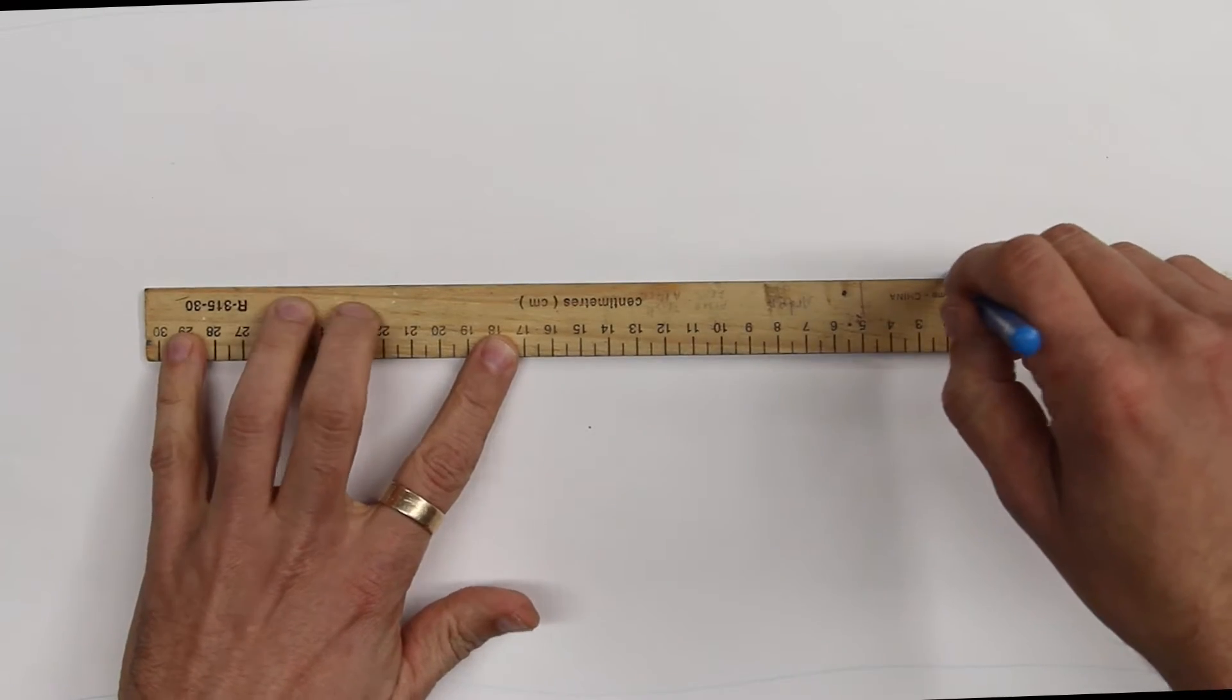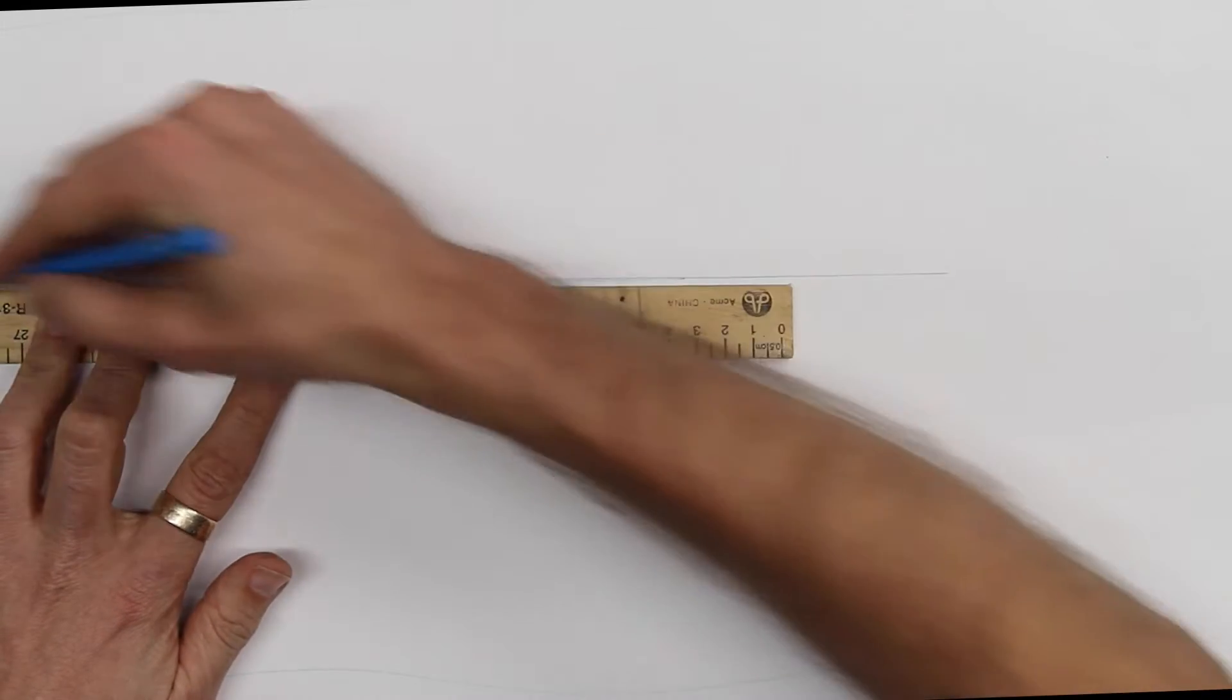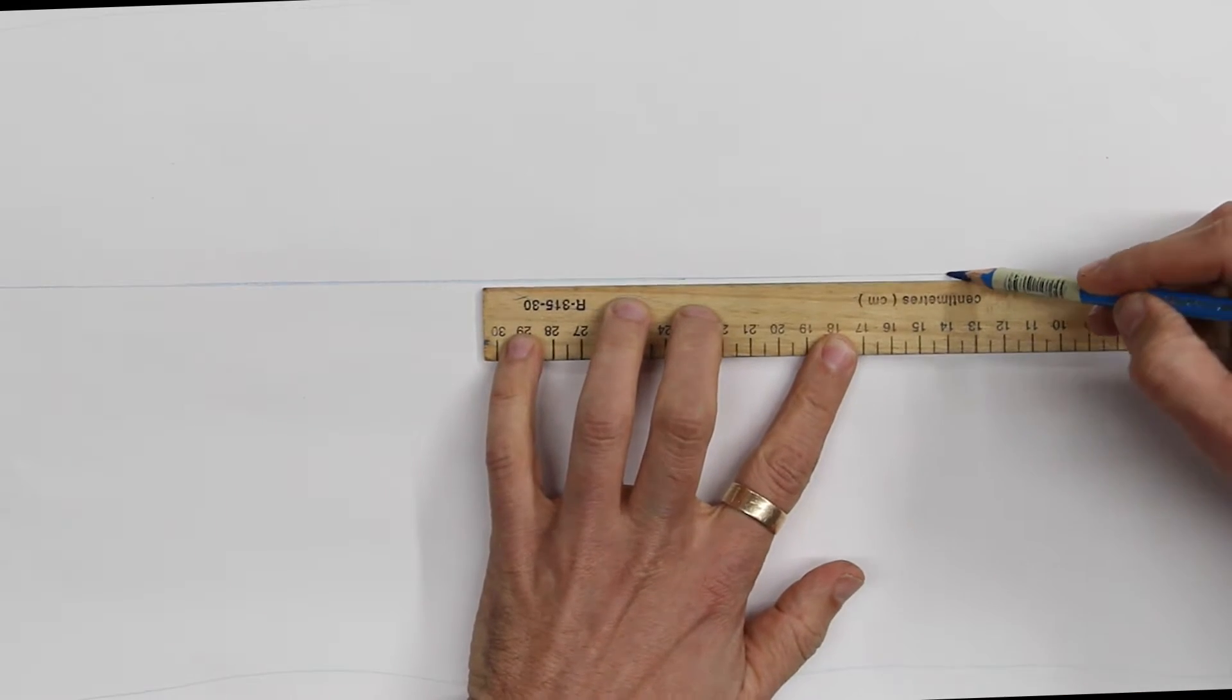We need a horizon line, which we can also think of as an eye level. It moves around as you move around, changing your height.